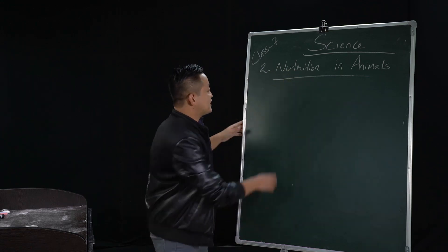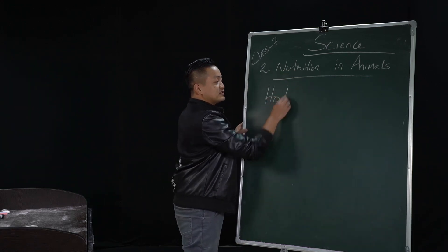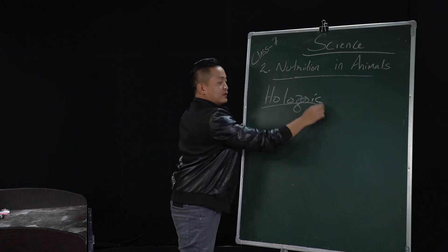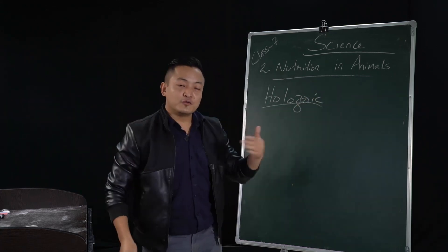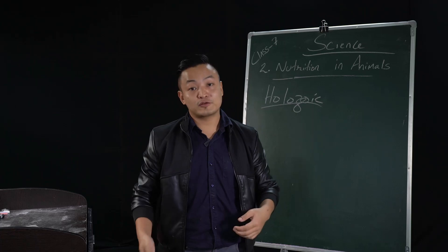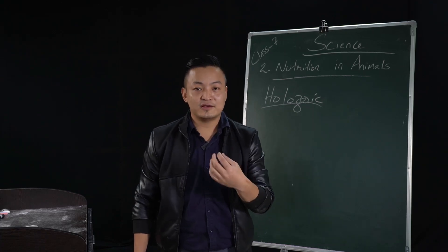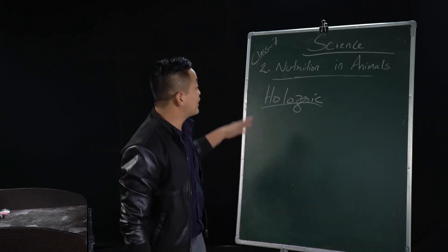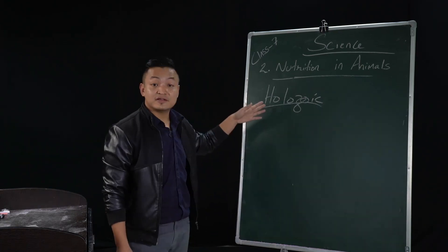So to start with, let me first give you this term: holozoic. We humans and animals are holozoic because we depend on and take in complex matter. We take solid food, and if we take solid food, then we fall under this category. So we are also holozoic animals.